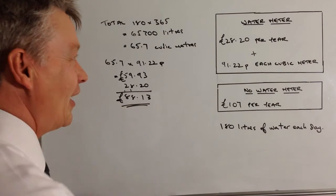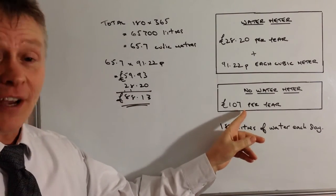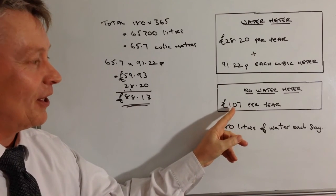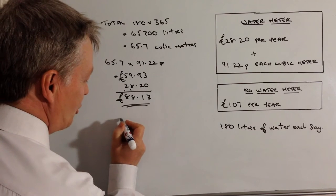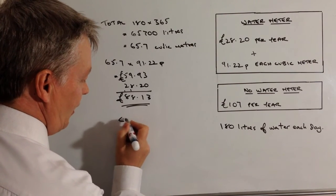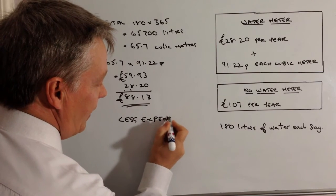Okay, so if he uses a water metre he's going to pay £88.13. If he has no water metre it's going to be £107 per year. So it's much cheaper, it's less expensive to use a metre.